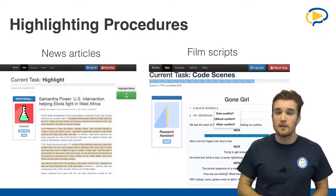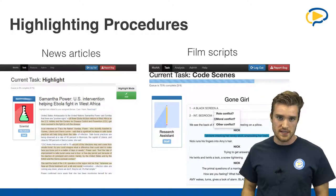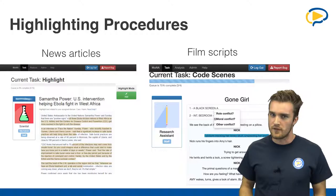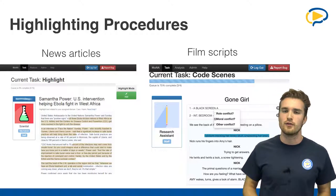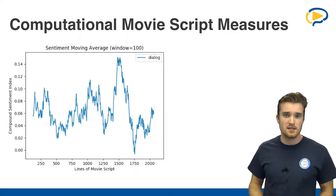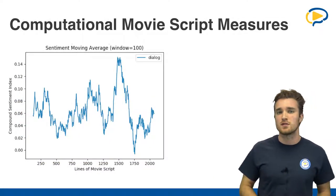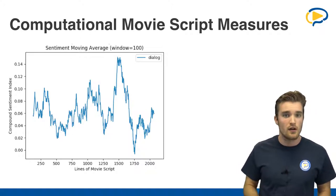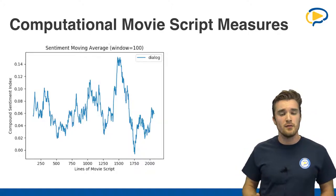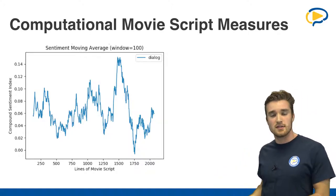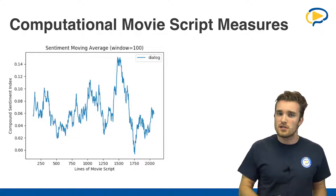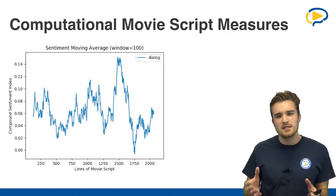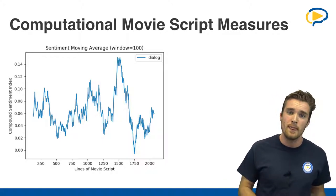Now you might wonder: where is the computational part in all of this? For our analysis of movie scripts, we use what is called a sentiment analysis tool to extract sentiment from scenes. As you can see on the left side here, this displays a graph over the whole movie where we can see how sentiment changes across the entire movie. This allows us to pre-select certain scenes to provide for coders for annotation.